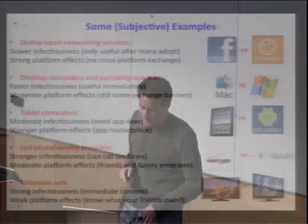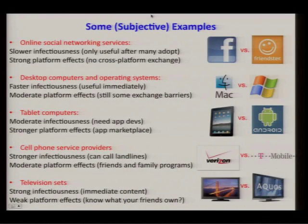To give some motivating examples from technology — and these are subjective; I don't necessarily intend you to agree with my characterization — just agree that there is variation across products and services in terms of these two parameters, infectiousness and platform effects. In online social networking services, you have a certain slowness of infectiousness, because by definition these services are only useful after a certain number of people — more specifically your own friends — have adopted. There's not a lot of joy in being the first user of Facebook.